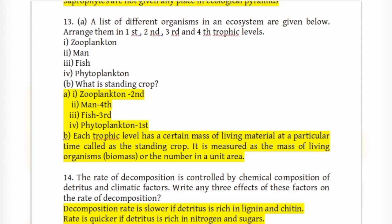Each trophic level has a certain mass of living material at a particular time, called the standing crop. It is measured as the mass of living organisms or their number per unit area.